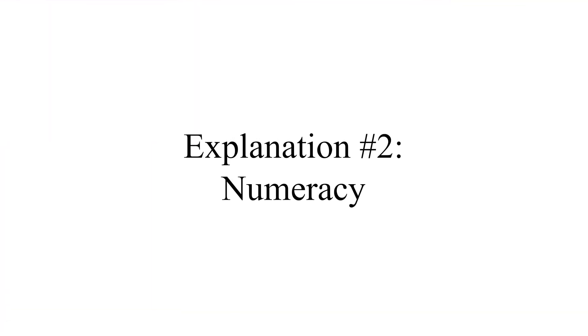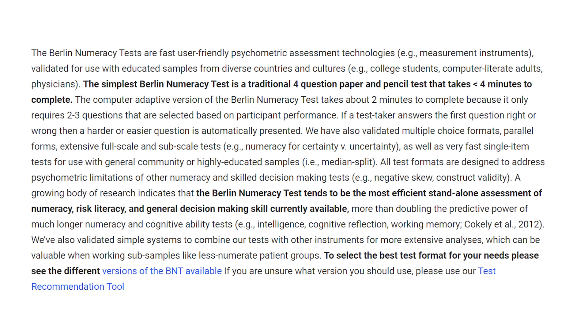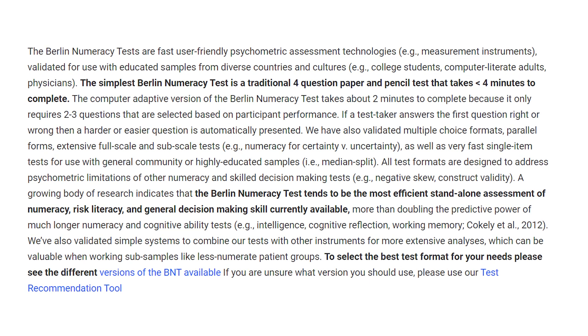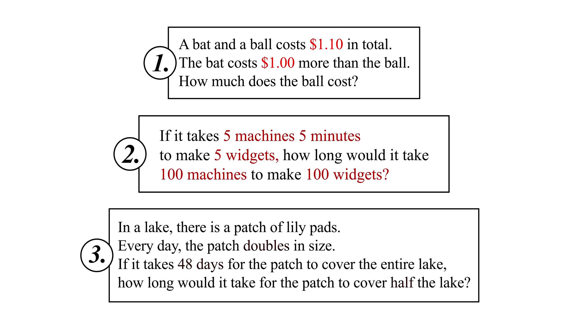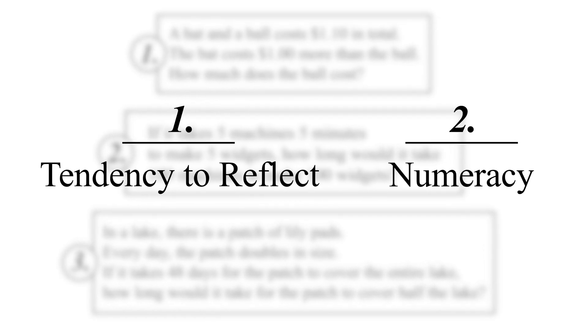There's a second explanation: maybe it's all about numeracy. Numeracy is to numbers what literacy is to reading — a basic math ability involving things like time, ratio, proportions, and measurements. All of the questions on the CRT involve numbers, so it's not surprising that measures of numeracy correlate quite highly with CRT performance. Math performance on standardized tests is more highly correlated with the CRT than reading performance. So these questions are testing two different things: the tendency to reflect, and a baseline mathematical ability.